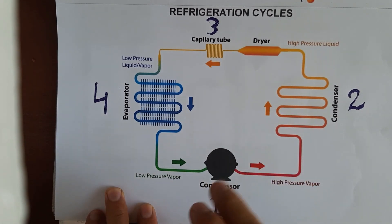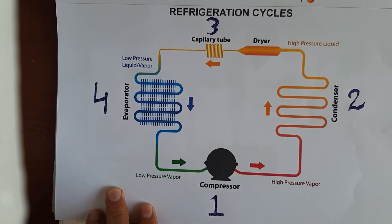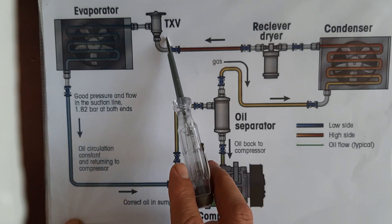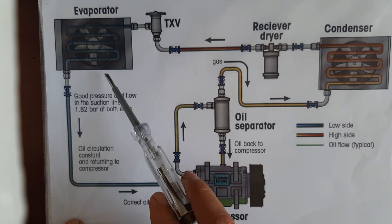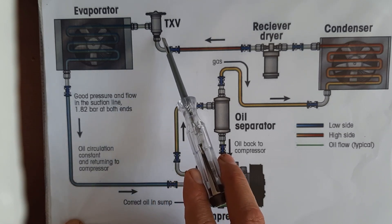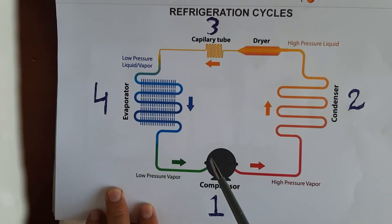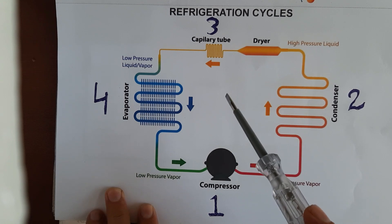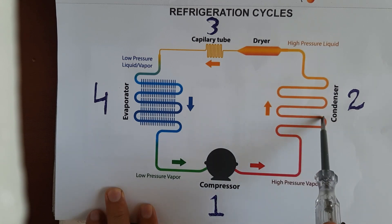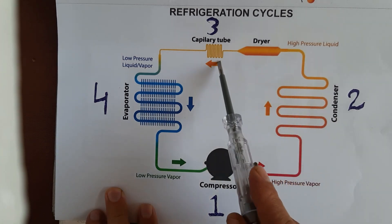Once you go above 3 or 4 tons, the difference is that small units use a capillary tube while bigger units use a TXV — a thermostatic expansion valve. That is the only difference; the rest of the refrigeration cycle is the same for chillers, freezers, cold rooms, and all vapor compression systems.